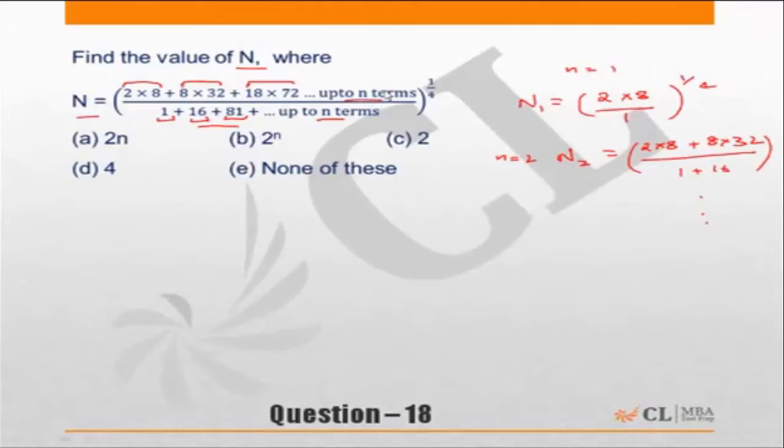Now the mistake that is commonly committed in this kind of question by students is they start creating a general term for the numerator and denominator and then try to get an answer. But what stops you from getting the answer from here itself?